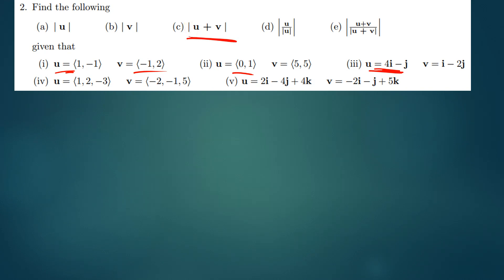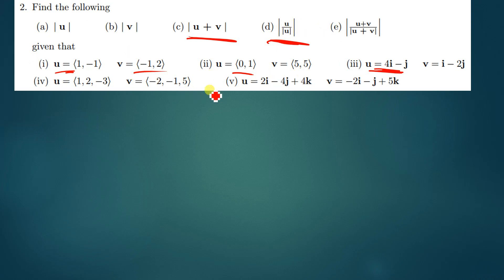When adding two or more vectors, you simply add their corresponding components. And then there's this part of finding the unit vectors and finding the magnitude of these unit vectors.